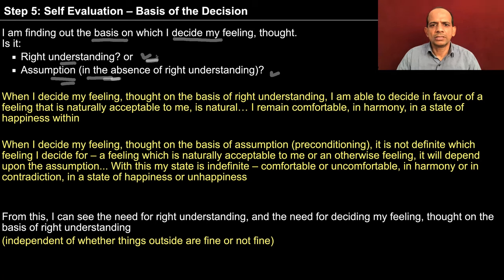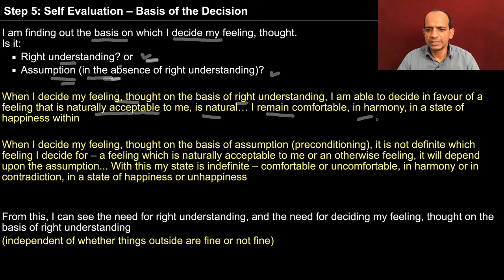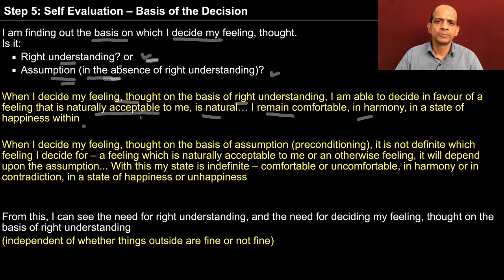So you have to make out in all your interpretations, all your decisions, what is the basis of that decision. Is it right understanding or is it absence of right understanding — some assumptions, some preconditioning? When I decide my feeling, my thought on the basis of right understanding, I am able to decide in favour of a feeling that is naturally acceptable to me, in accordance with human nature, and then I remain comfortable, in harmony, in a state of happiness within. In step 2 we observe whether the feeling is naturally acceptable; in step 3 whether I am comfortable with it. Now I can see that I remain comfortable only when the basis of my decision is right understanding.